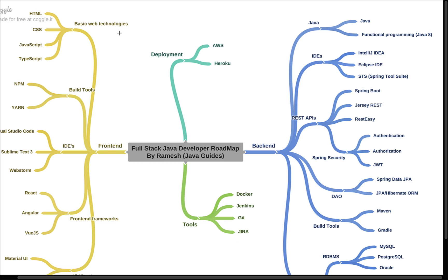These are the bare minimum things you need to learn to become a full stack Java developer — the front-end technologies, tools, frameworks, and back-end technologies, frameworks, and tools listed here. In real-time projects you may use a few more libraries or tools, but these are the common ones. I hope you found this video useful — let me know any questions in the comments below, and I'll provide a link to this flowchart in the video description.